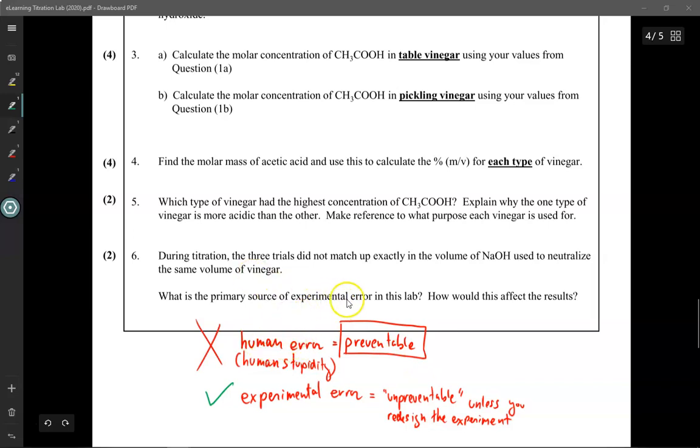Do not say as an error in the lab, oh it's because the person spilled some of their chemicals. No, they should repeat the experiment until they stop spilling those chemicals. Human errors are preventable errors.